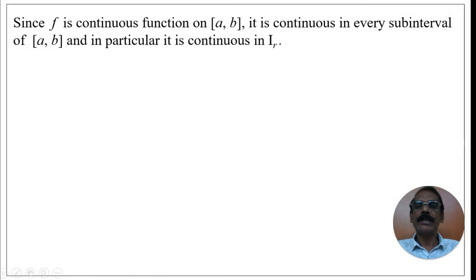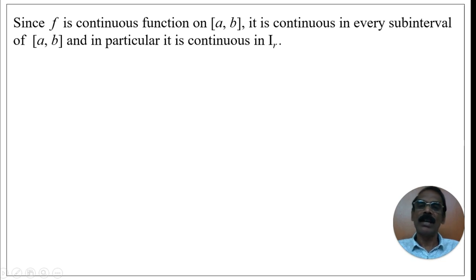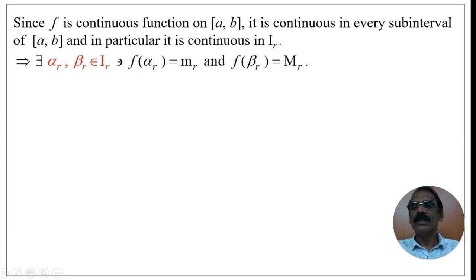Since f is continuous on [a, b], it is continuous on each subinterval, and in particular on the r-th subinterval Iᵣ. Therefore, there exist two points αᵣ, βᵣ ∈ Iᵣ such that f(αᵣ) = mᵣ and f(βᵣ) = Mᵣ.